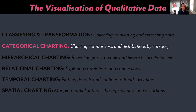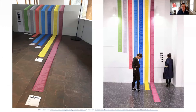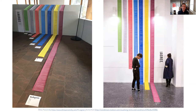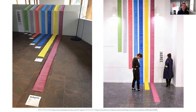First up in the categorical family, just a few examples. This is a piece of analysis that looks at simply the length of word counts as used in the terms and conditions that we quite casually agree with for various social media accounts, such as Instagram, Facebook, Snapchat, Google, all these different terms and conditions. You can see just by the sheer magnitude and size of these printouts just how many words are used. So in effect, it's like a physical bar chart.